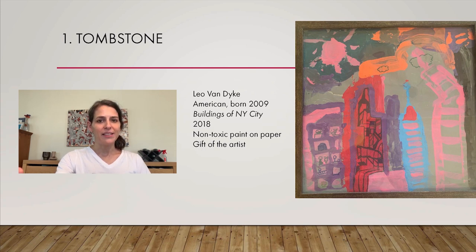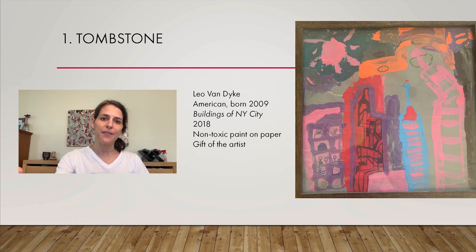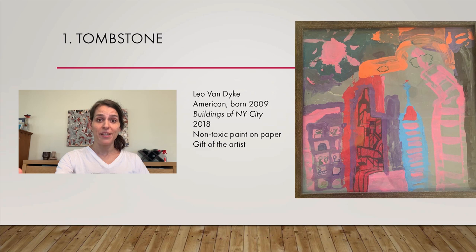Finally, the credit line is the line at the bottom that tells you how the artwork came into the collection. So in this case, it's my collection, and he gave it to me, so it's a gift of the artist. Normally in a museum, you would have an accession number there, which is the inventory number. Each artwork in the collection gets a unique number to keep track of it. I do not have a database for my children's artwork, and I do not plan on creating one, so we do not have an accession number.